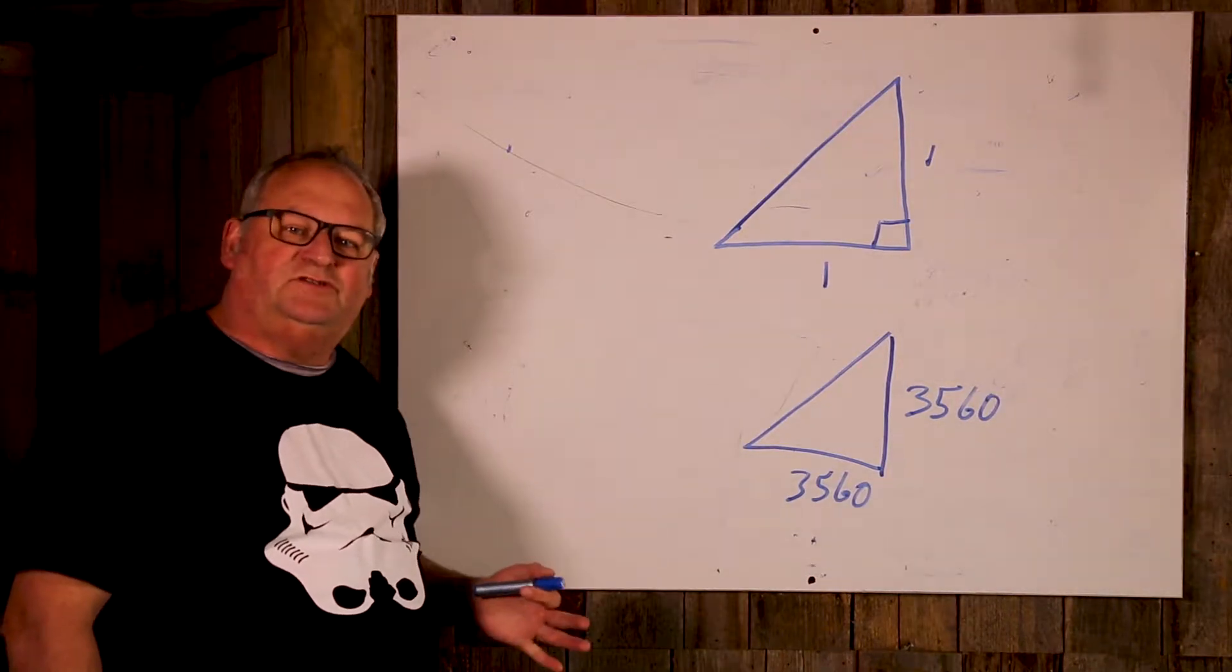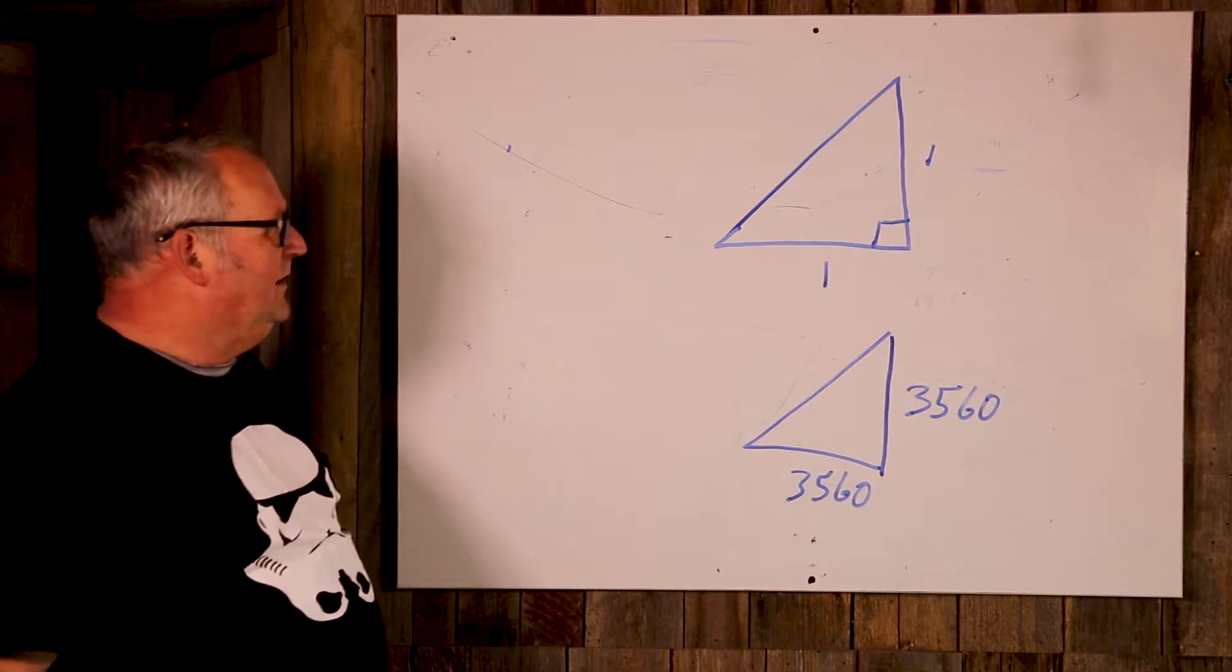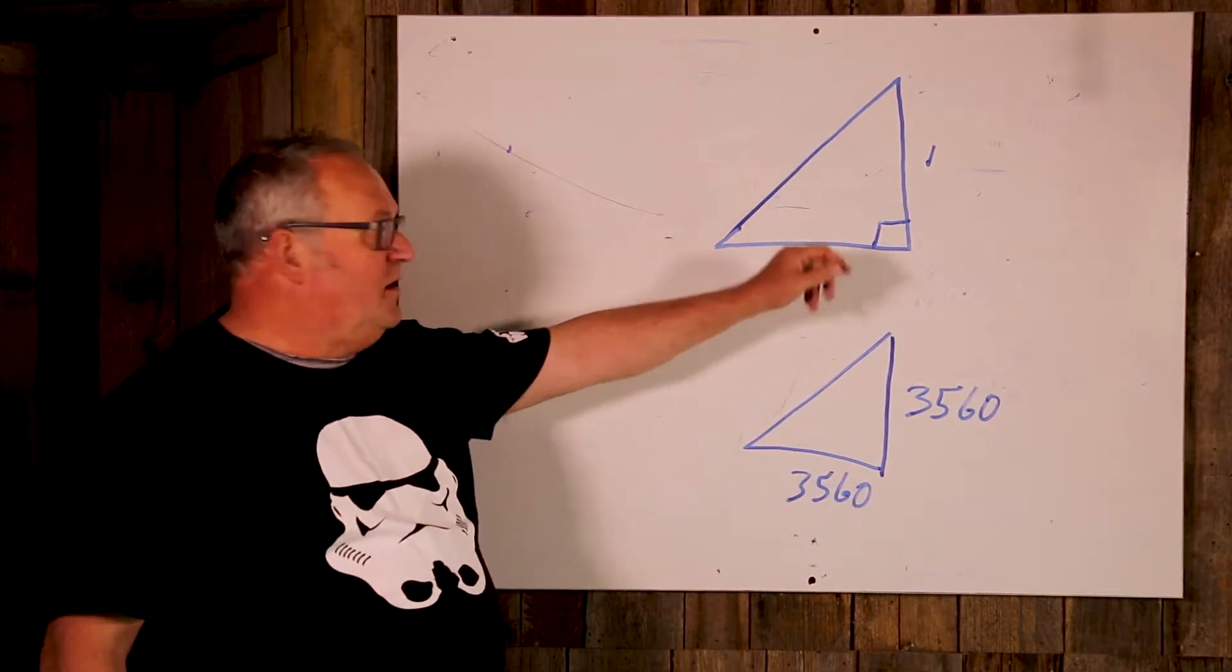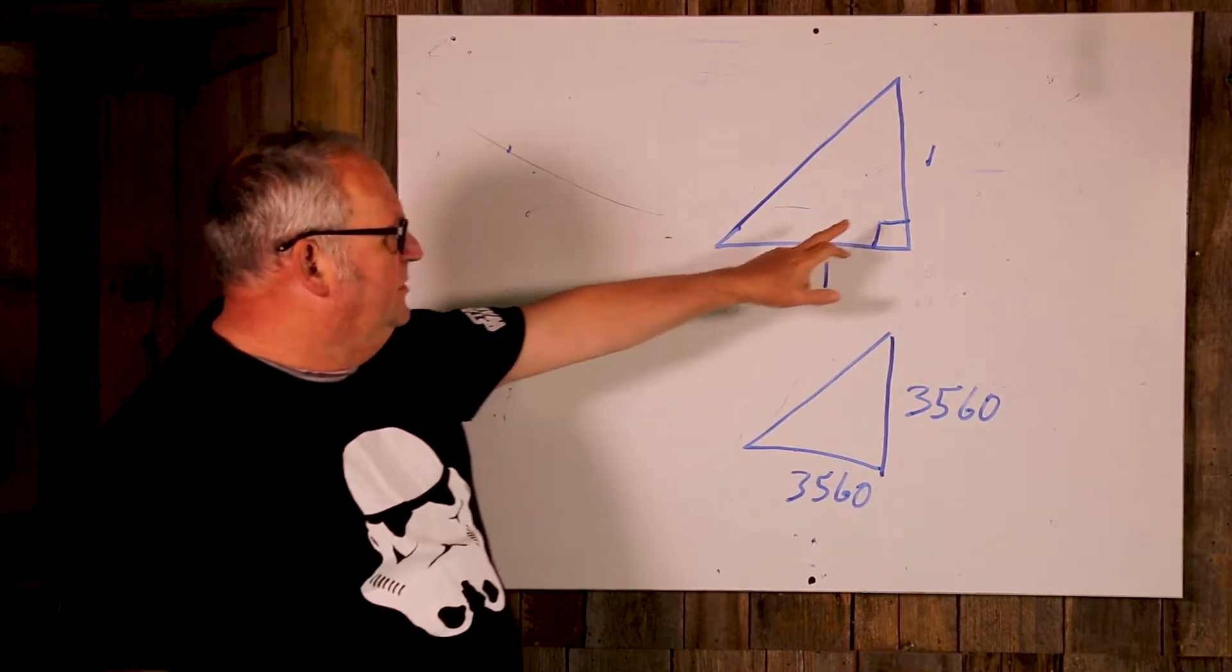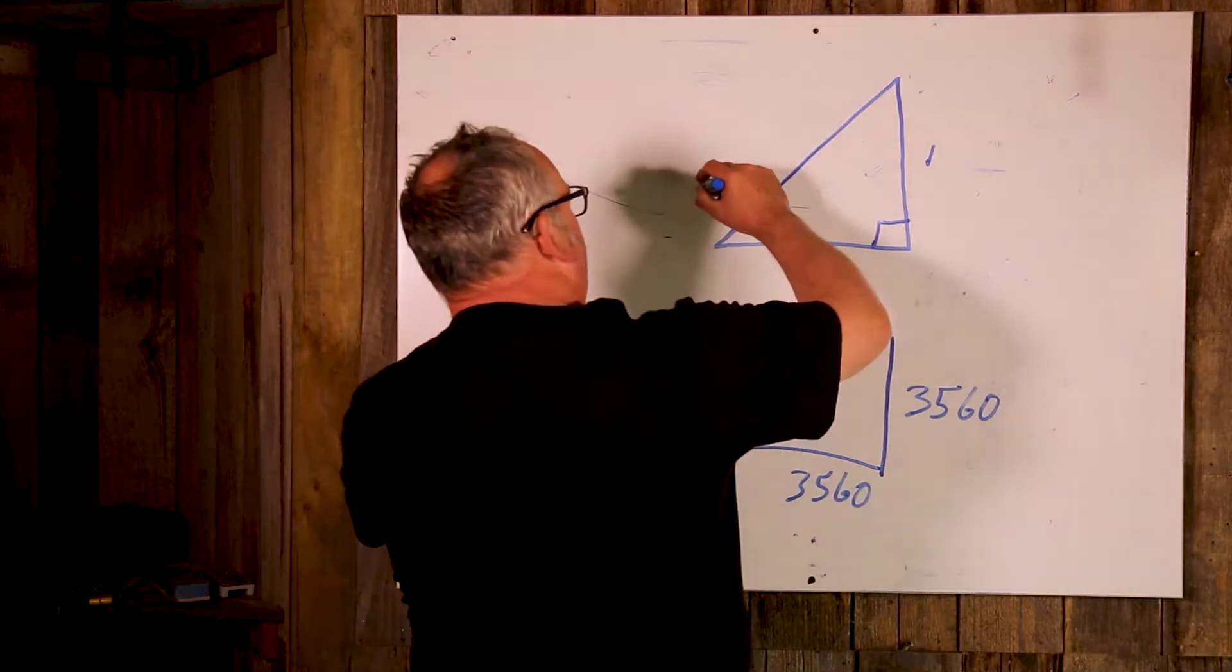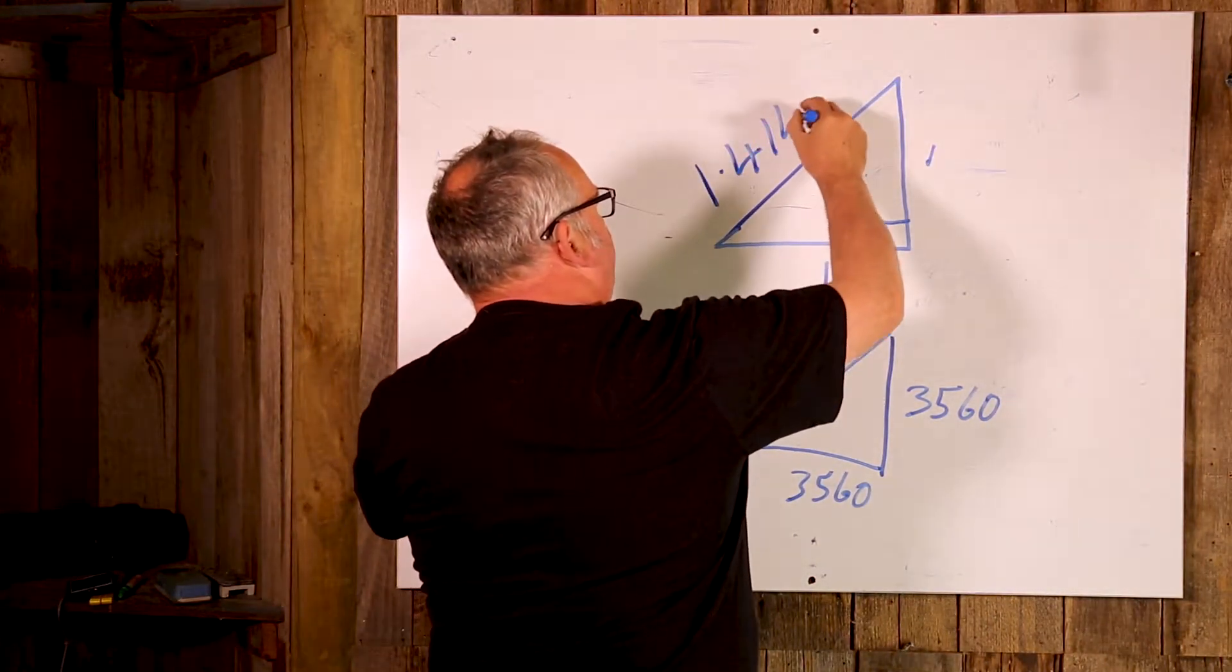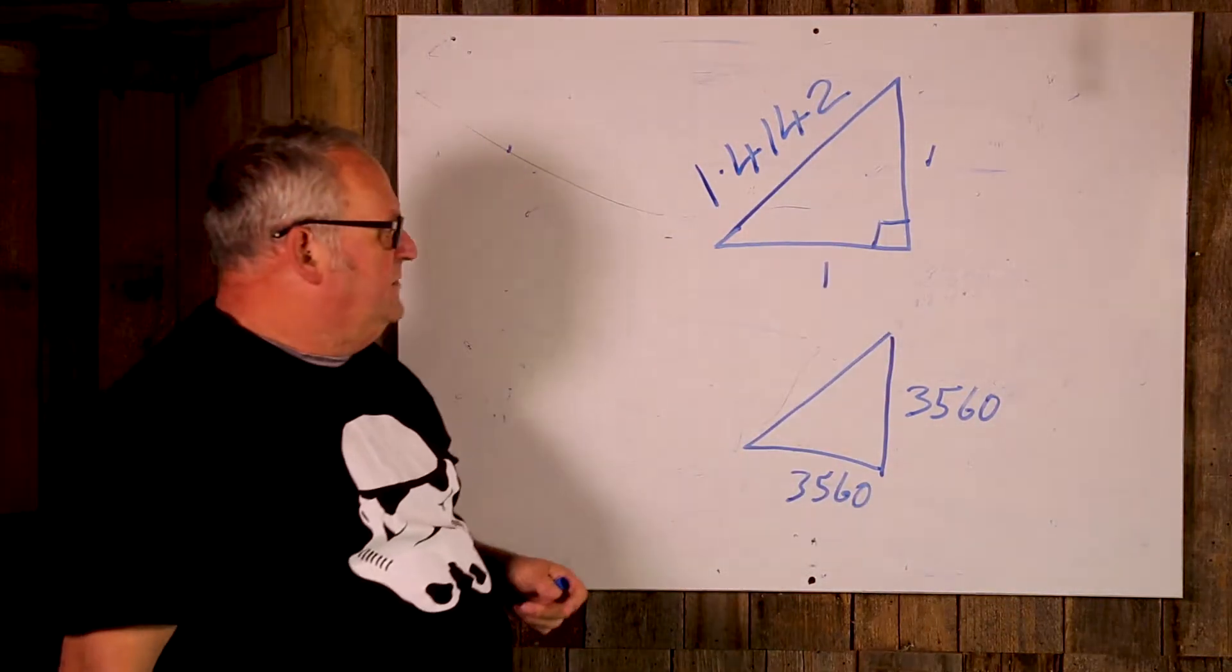My name is Ian. Today I'm going to talk to you about my most favorite number. I absolutely love it. It comes from a basic triangle which has got one across the bottom, one up the side, and it's 90 degrees in the corner. I know that the hypotenuse for that is 1.4142.